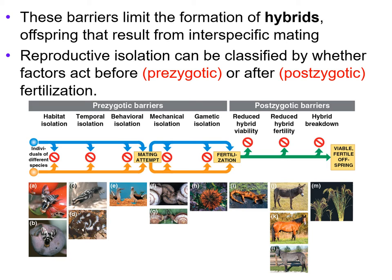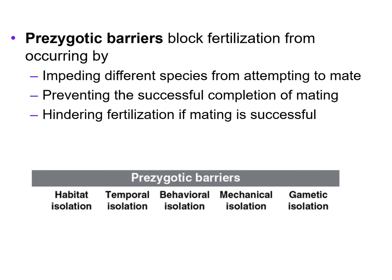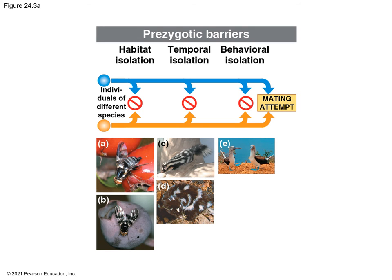Reproductive isolation can be classified by whether factors act before the zygote is formed or after the zygote is formed. Remember, the zygote is the entity that is the product of the sperm and the egg. So these reproductive barriers — we're going to look at the prezygotic barriers first. Prezygotic barriers block fertilization from occurring by impeding different species from attempting to mate, preventing the successful completion of mating, or hindering fertilization if mating is successful. We'll talk about habitat isolation, temporal isolation, and behavioral isolation.